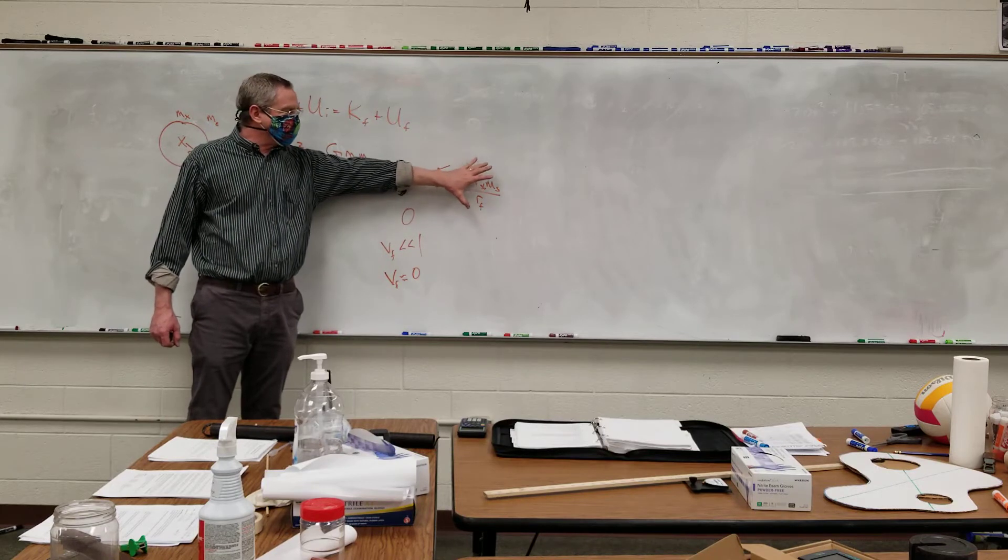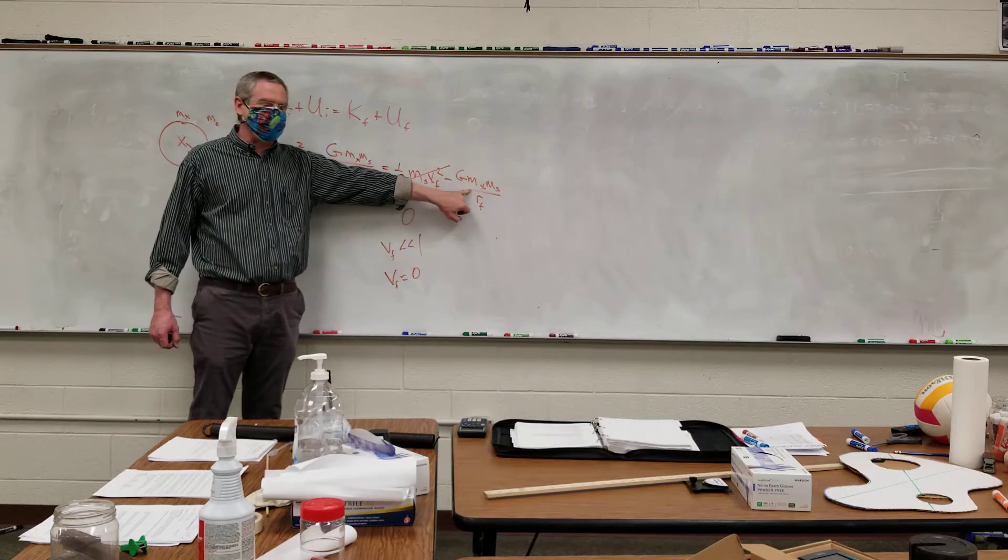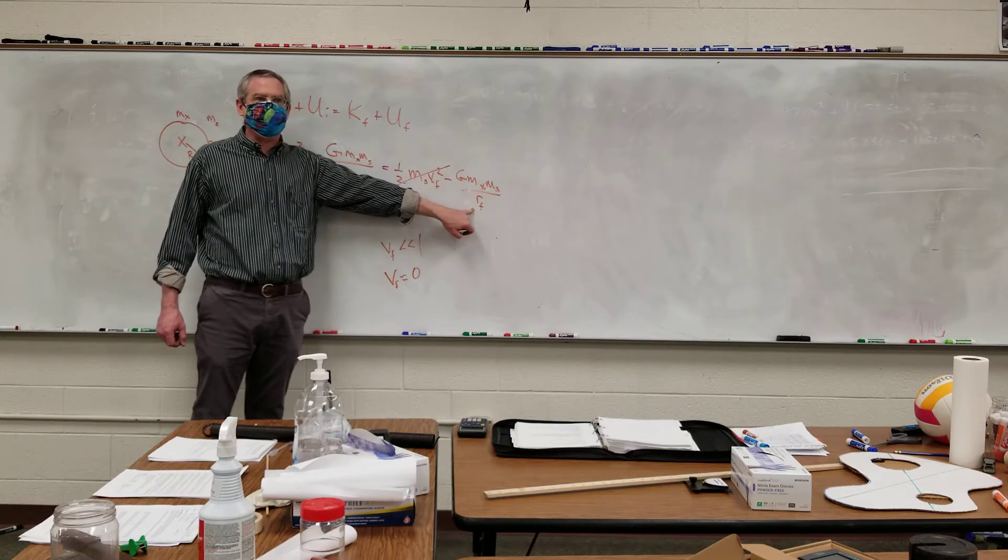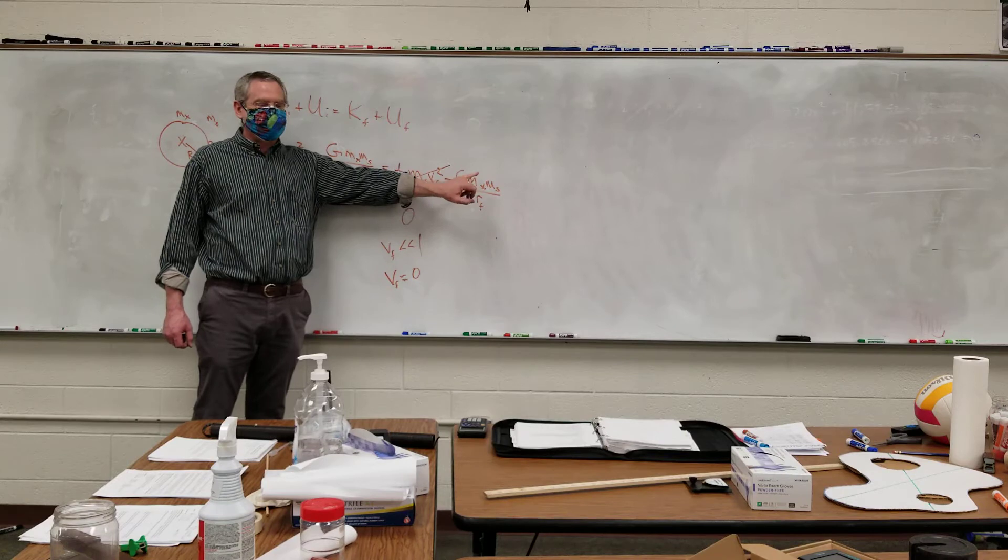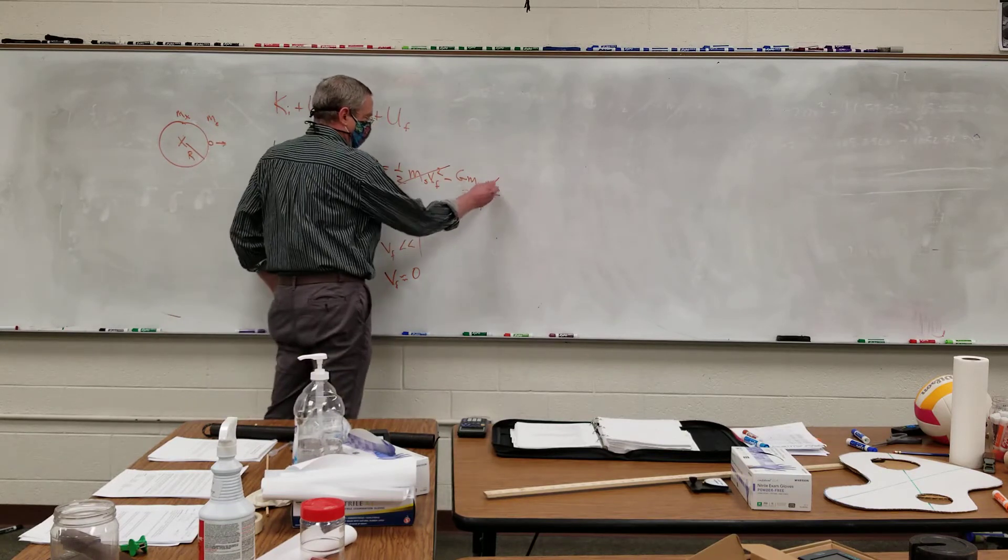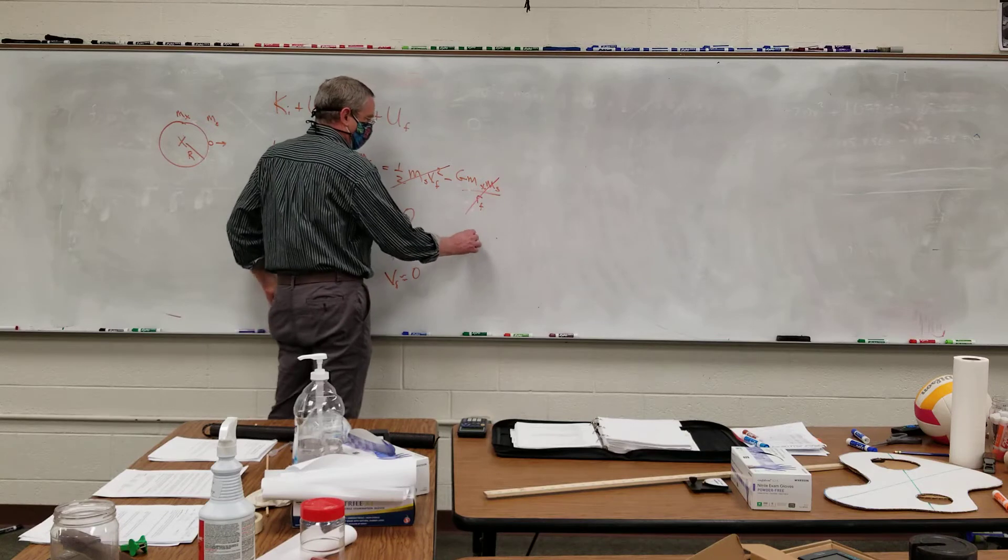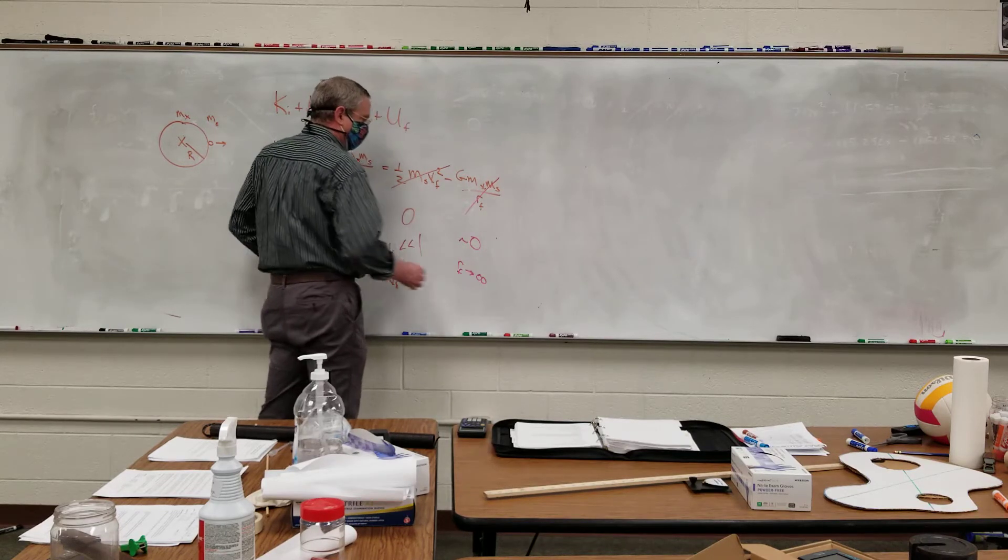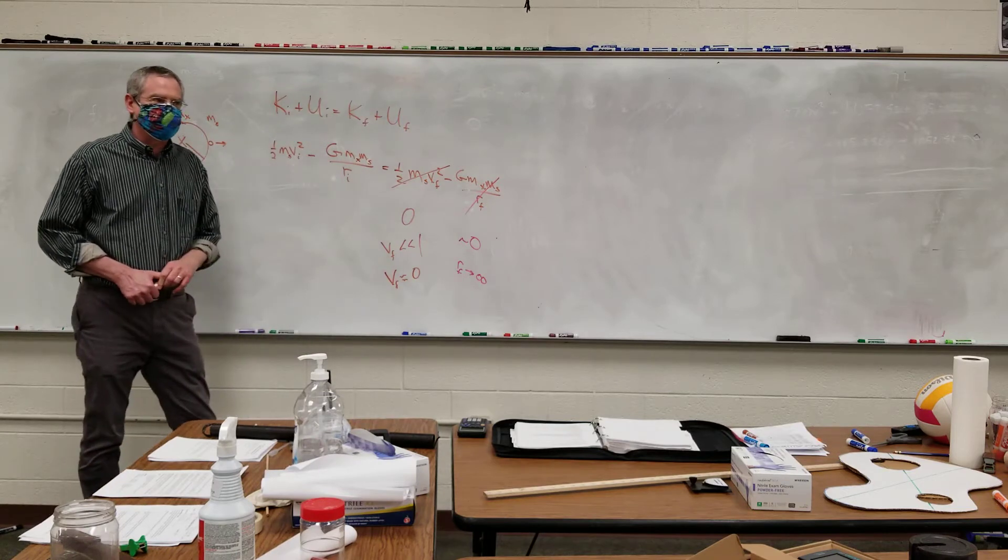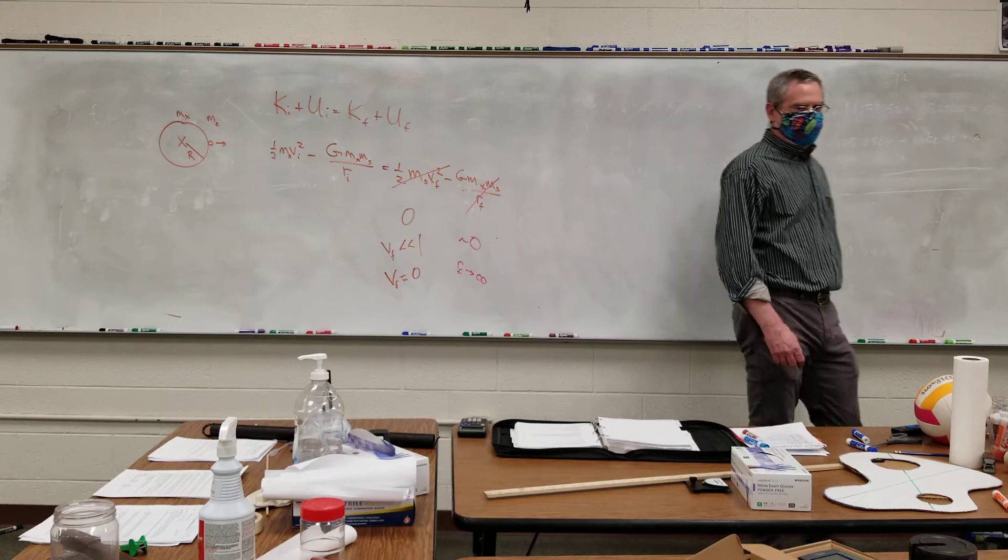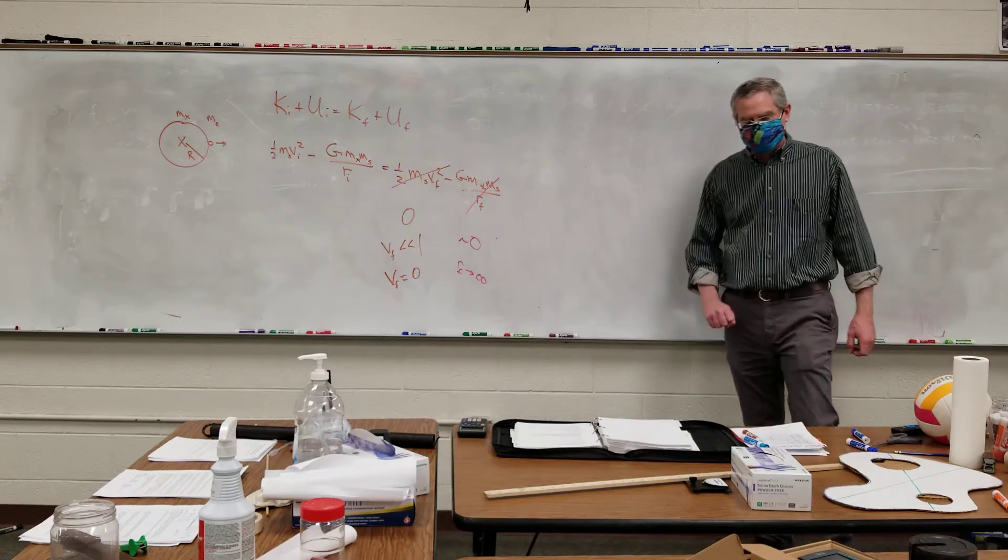I got a fraction here. G is a constant. Mass of the planet is a constant. Mass of the stuff is constant. So I have some constant divided by a huge number. And so therefore, that's close enough to zero because my denominator gets evidently large. Close enough so the term becomes close enough to zero.